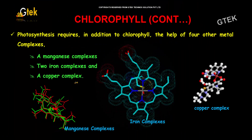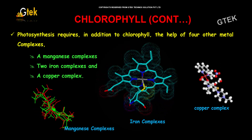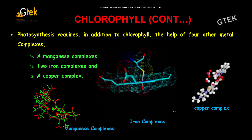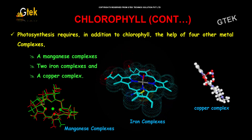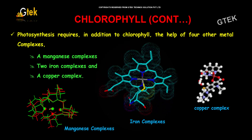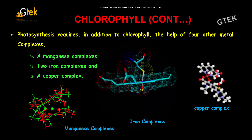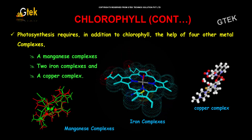Photosynthesis requires, in addition to chlorophyll, the help of four other metal complexes: manganese complexes, iron complexes, and copper complexes.